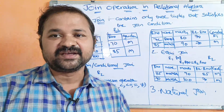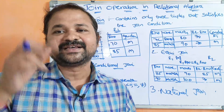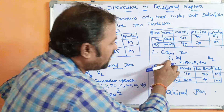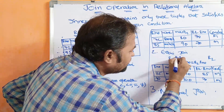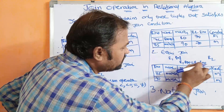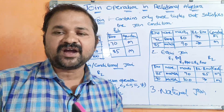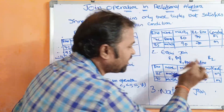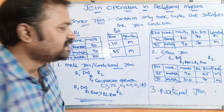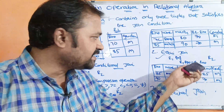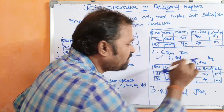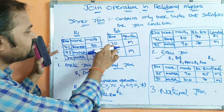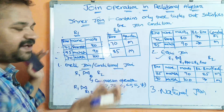The second type is equi join. Equi join means the join operator is the equality operator, the is-equal-to operator. So here R1 equi-join R2, and the condition is R1.roll_number equal to R2.roll_number. Because equi join means we have to use the equality operator. Now let us see what is the output.